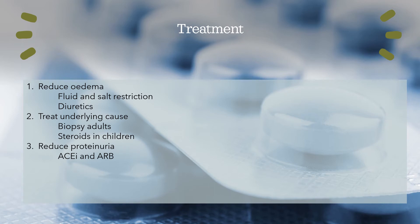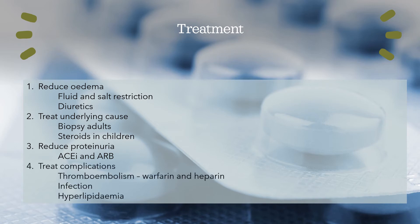Proteinuria should be reduced by using ACE inhibitors and ARBs, though this might not be necessary in minimal change disease. You also need to be prepared for complications. Clotting factors are proteins developed by the liver — they may be lost in the urine due to this proteinuria, putting patients at risk of clots and making them hypercoagulable; treat this with heparin and warfarin. Immunoglobulins are proteins as well, so they could also be lost in the urine, putting patients at risk of infection — give appropriate prophylaxis such as vaccination. Lastly, an increase in cholesterol may occur due to the liver's response to decreased osmotic pressure; treat these with statins.